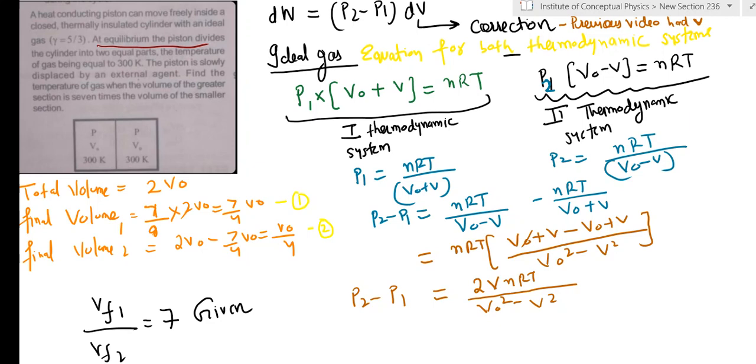Alright, so this is my next video on the solution. I've just done a small correction in my previous video. The work done was mentioned as P2 minus P1 into V, which is wrong. We must show that volume has changed, and since this process has gone very slowly, the change in volume should be written as DV because the work done is DW, not as V only. So that's the first correction, please note it down.